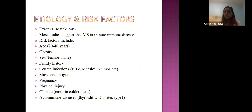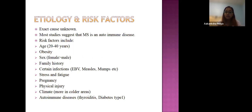Regarding etiology and risk factors, the exact cause is unknown, but most studies suggest it is an autoimmune disease. Risk factors include age, other autoimmune diseases, obesity, sex (female more than male), and family history. Certain infections like Epstein-Barr virus, measles, mumps, rubella, and HIV can trigger episodes. Stress, fatigue, pregnancy, physical injury, and climate are also risk factors. Canada's high incidence may partly relate to its colder climate.